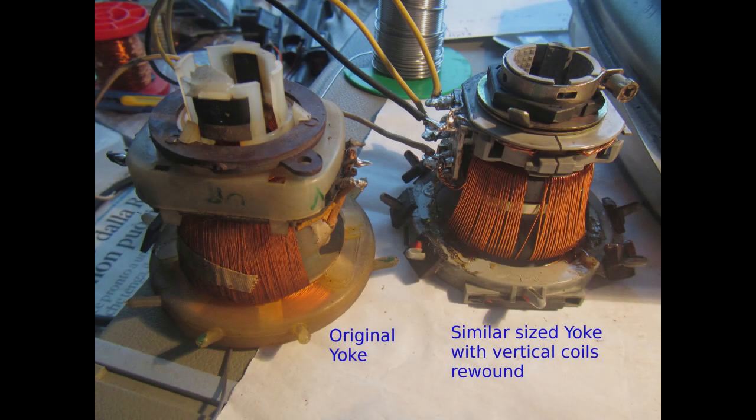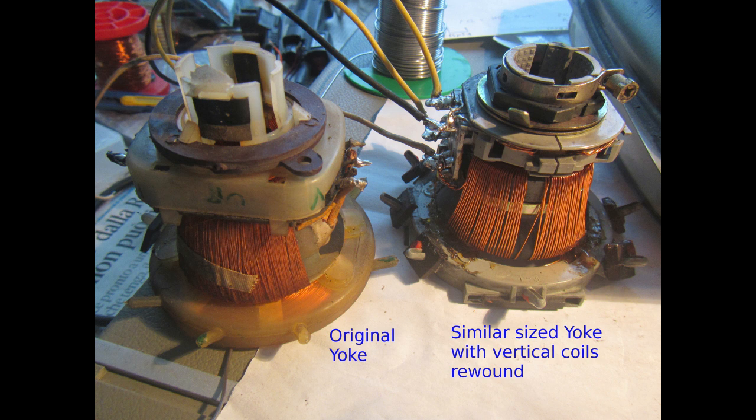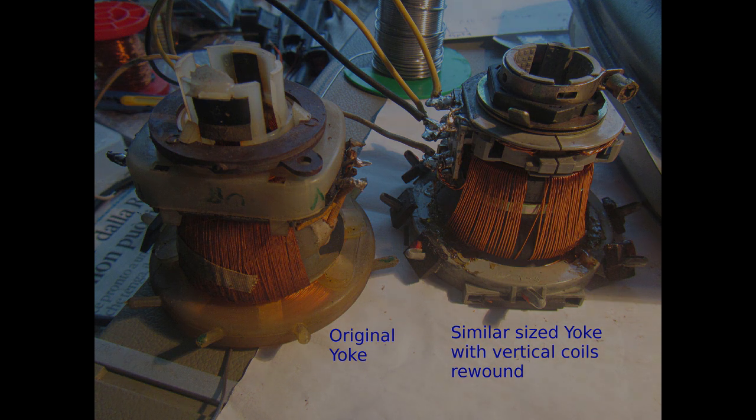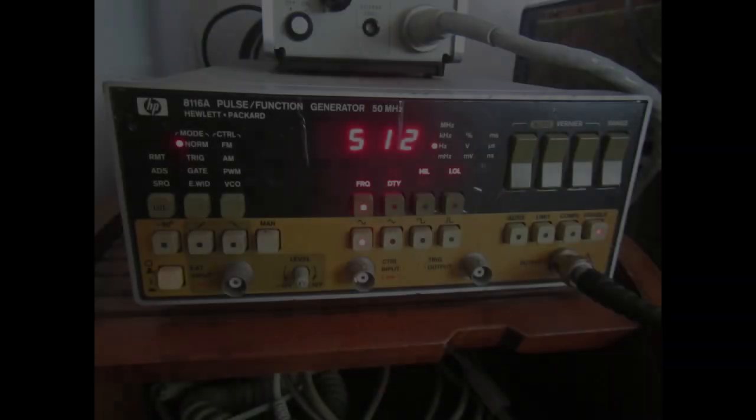First, for XY drive I had to remove the original deflection yoke and substitute it with a different one where the vertical coils have been rewound. Why this is needed and the winding procedures will be the argument of the next video, together with the deflection circuit details. By the way, this new yoke was donated by the same discarded serial terminal that already donated the CRT neck PCB. To drive the deflection yoke I used the HP 8116A function generator that in theory has enough voltage output for full deflection. And for the other axis I used a small audio generator that is only capable of a few volts peak to peak.